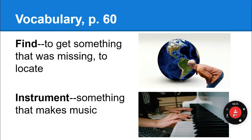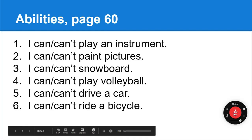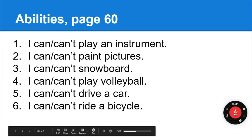Find — you get something that was missing, or you locate something. Instrument — this is something that makes music; the instrument in the picture is a piano. Juggle — that's to make things move really fast with your hands. Juggling is a very special skill. Chopsticks — most of you use them every day.